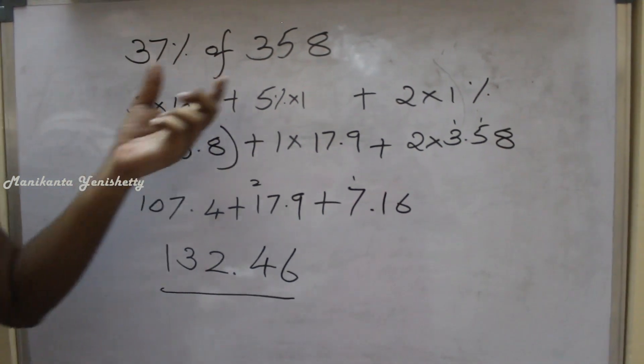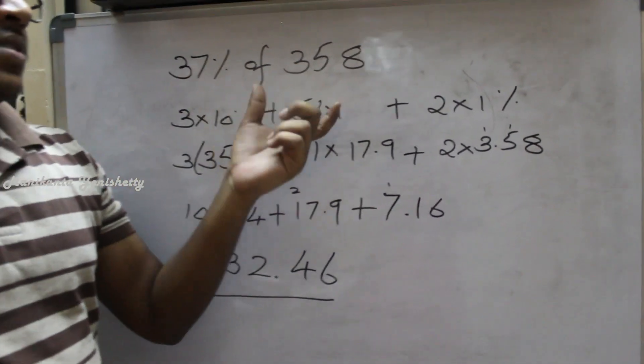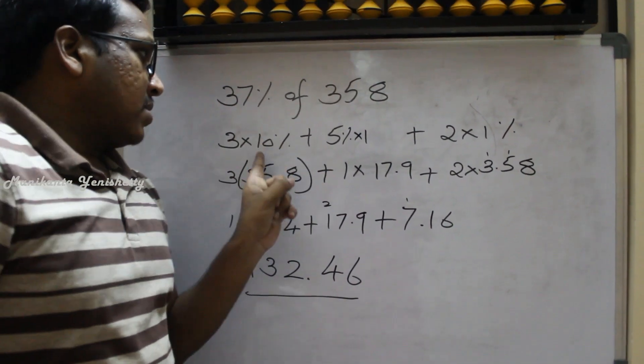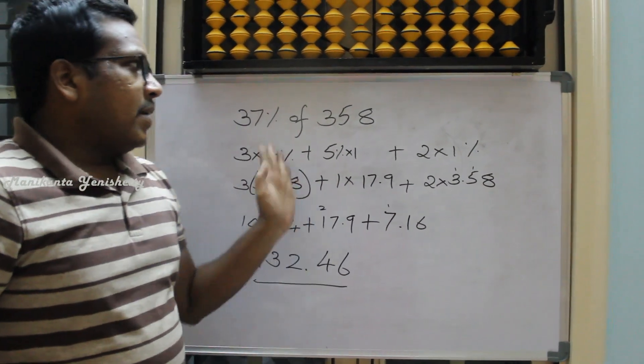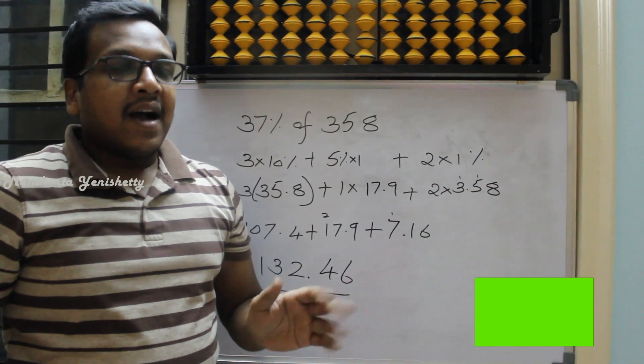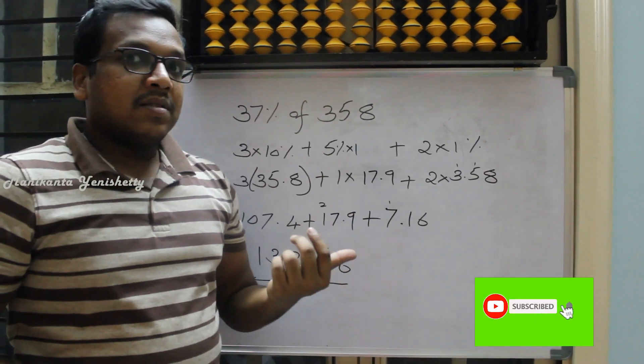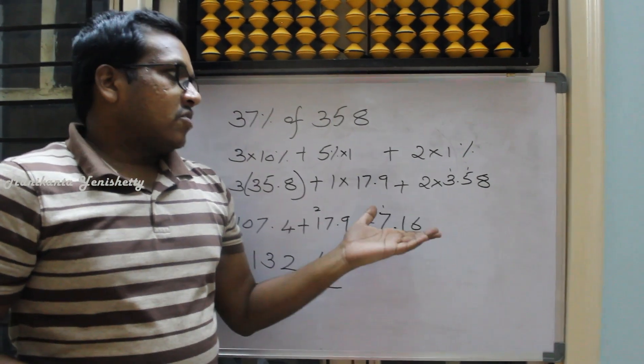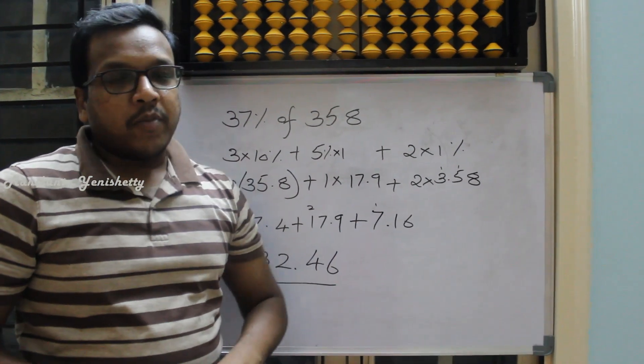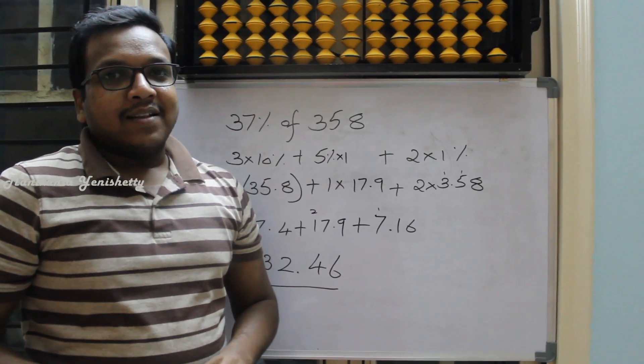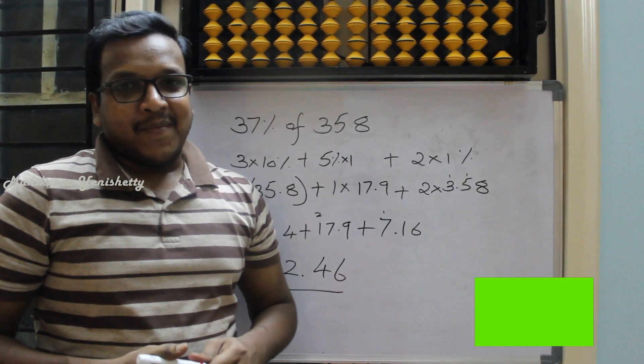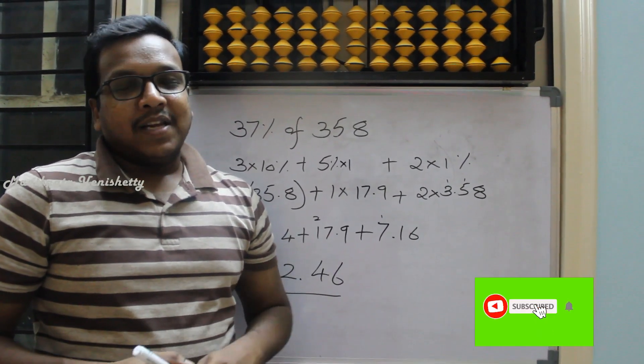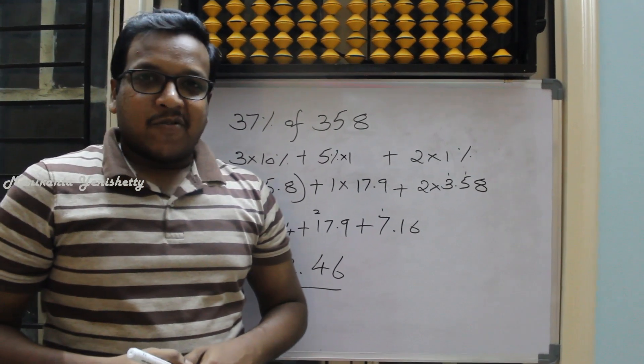This is the shortcut for percentages only just by knowing 10%, 5%, and 1%. If you know that, we can find any percentage in a simple way. I hope this method you feel is very easy, and you can use this for shortcuts in your school method and also for competitive exams. Hope you like this method. Please do like, comment and share the video, and please do subscribe my channel. Thanks for watching. Bye bye.